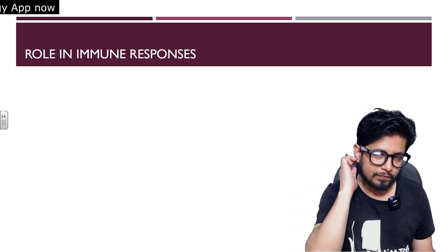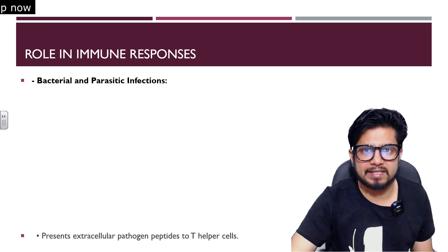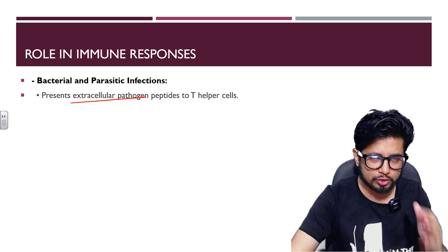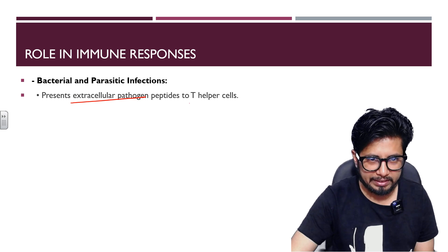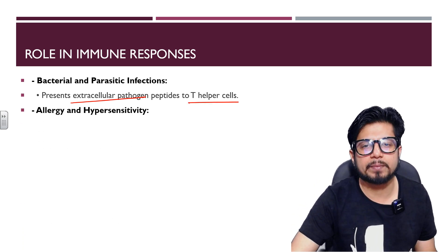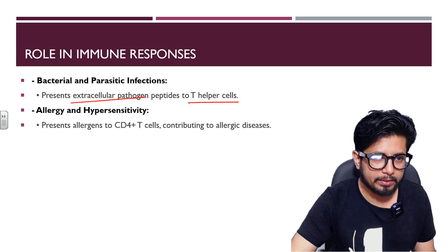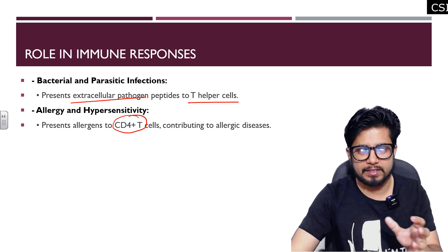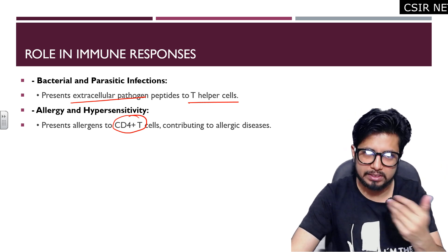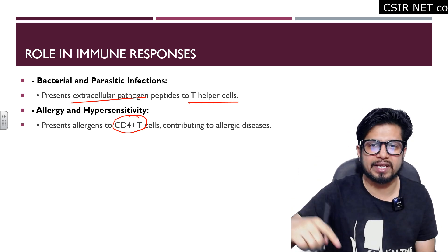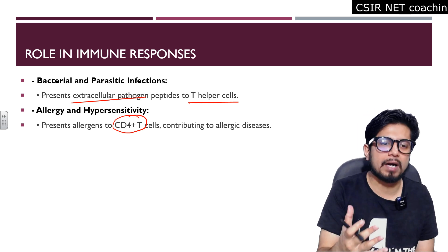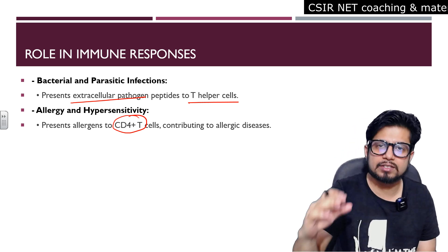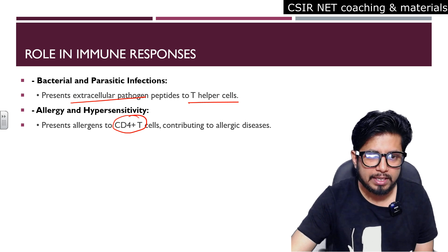The role of MHC class 2 includes presenting extracellular pathogen fragments from bacterial and parasitic infections to T helper cells. In allergy and hypersensitivity, it presents allergens to CD4-positive T cells. Whether it's an allergen or pathogenic part, CD4-positive T cells will trigger an array of immune responses and allergic diseases.